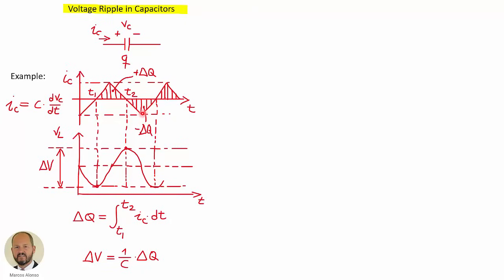Then in the other area, when the current is negative, we are removing charge from the capacitor, so the voltage is decreasing from a maximum value to a minimum value. Because the evolution of the current is linear and taking into account the differential equation of the capacitor, during this interval the voltage can be calculated as the integral of the current, giving a parabolic evolution of the voltage. We are interested in the peak-to-peak voltage ripple, which is 1 over the capacitance times the charge injected or removed from the capacitor, calculated using this integral — i.e., this area here.